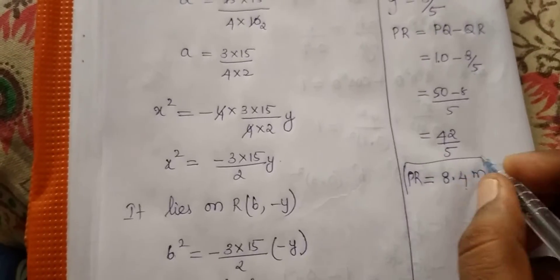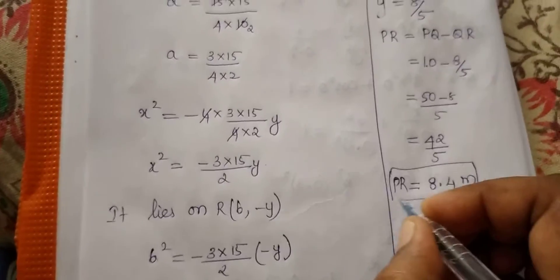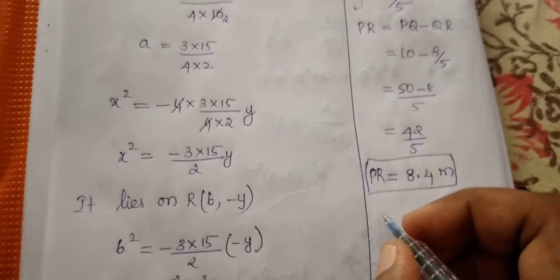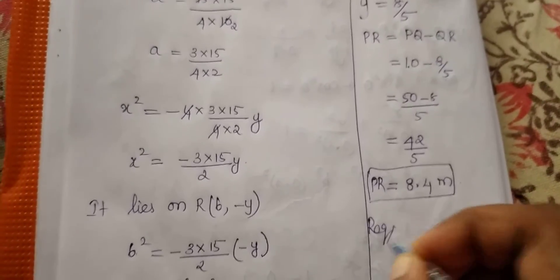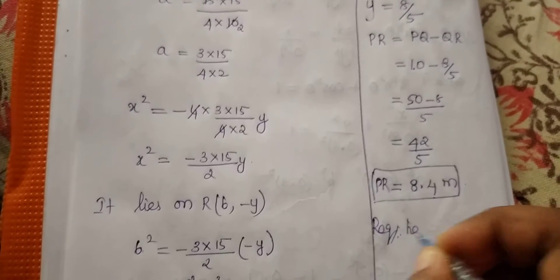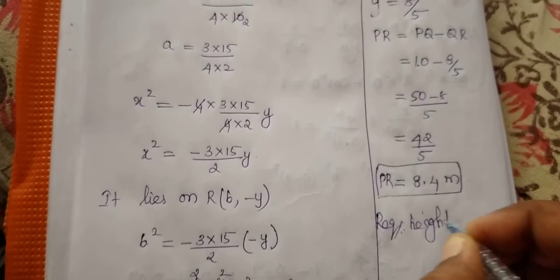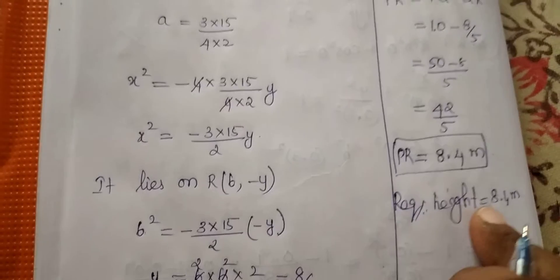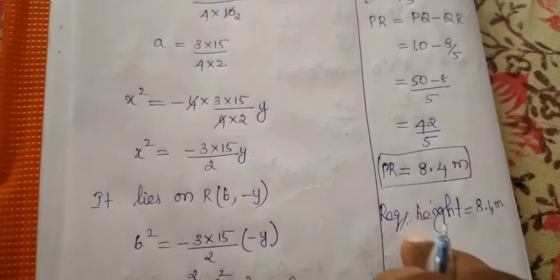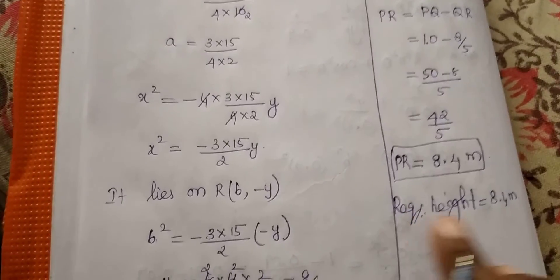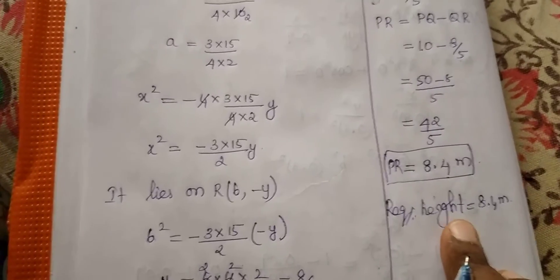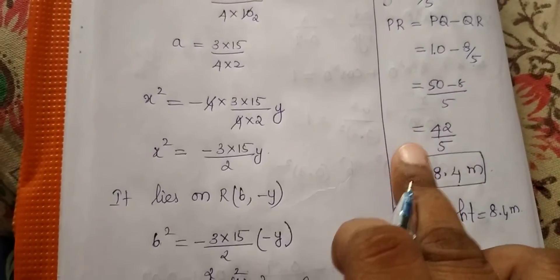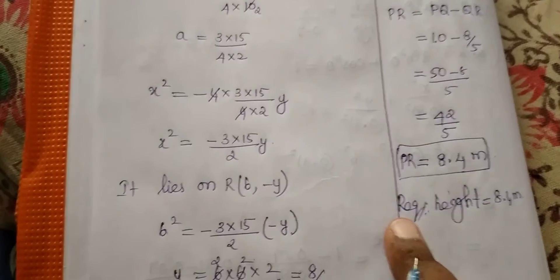PR is the required height. The required height is equal to 8.4 meters. Note: if you find the value for y, write the final answer as required height; if you find the value for x, write it as required width.